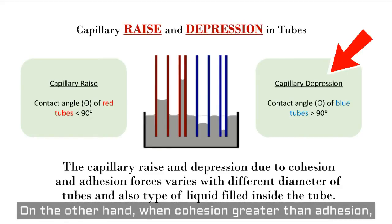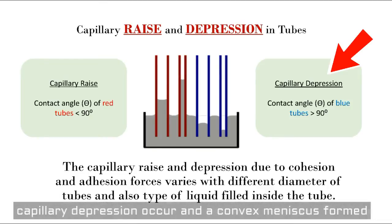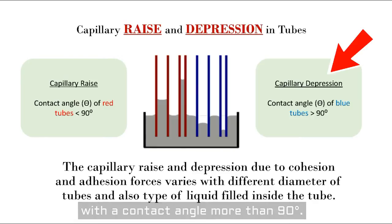On the other hand, when cohesion is greater than adhesion, capillary depression occurs and a convex meniscus forms with a contact angle more than 90 degrees.